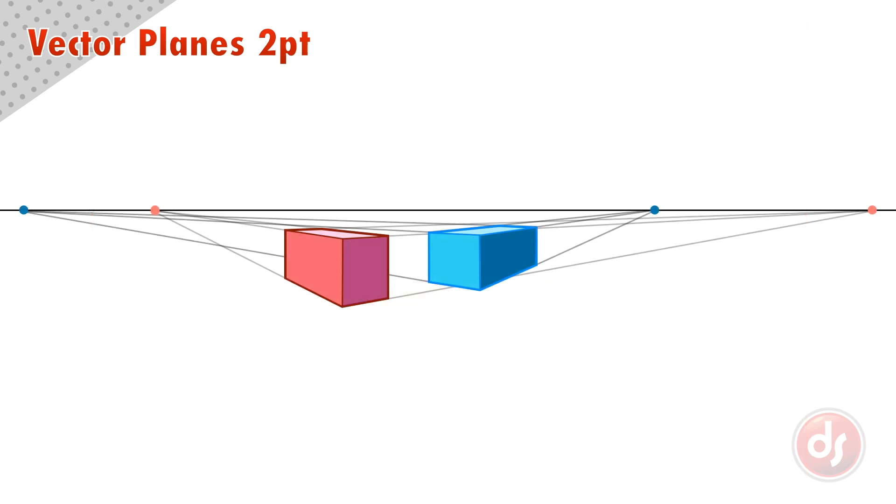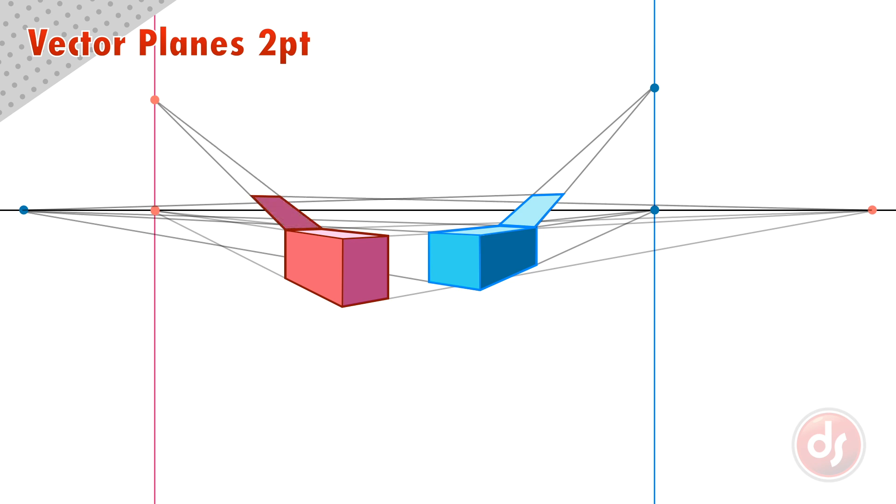But what if we have multiple objects that we want to draw vector planes to? If I draw a vector plane for the blue box, I would make a vertical horizon line through the vanishing point of the blue box, and converge lines to a vertical vanishing point. But to draw a vector plane on the red box, the vertical horizon line must go through the red box's vanishing points. This shows us a simple rule we need to follow. Each vertical horizon line must go through the vanishing point of the object the vector plane belongs to.